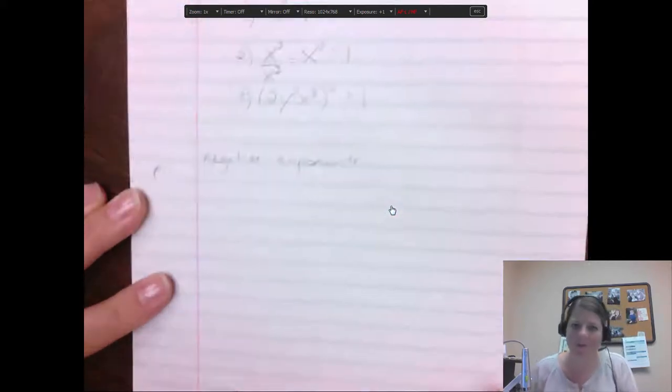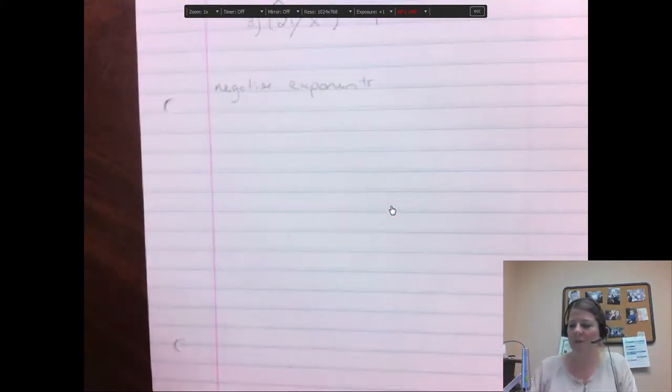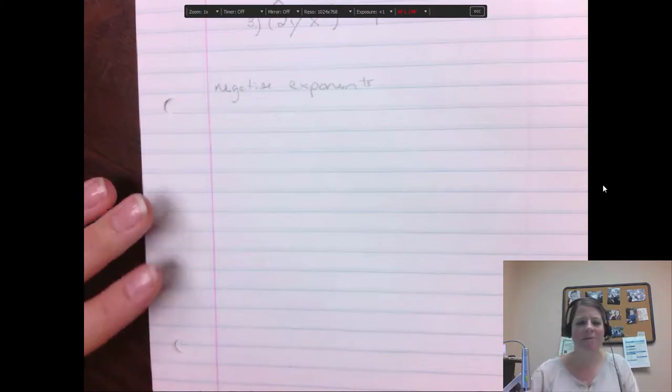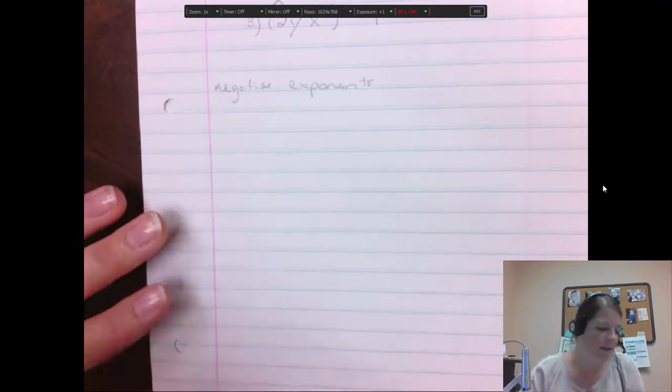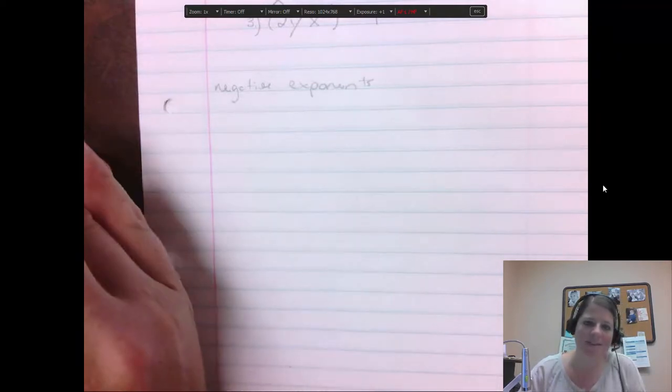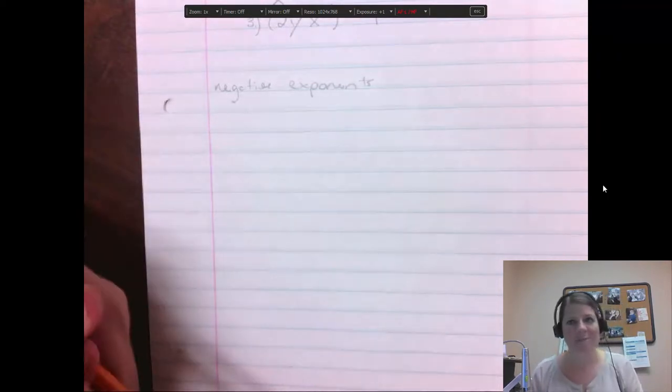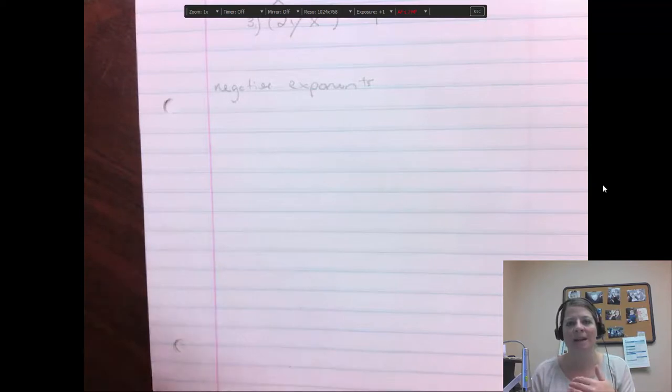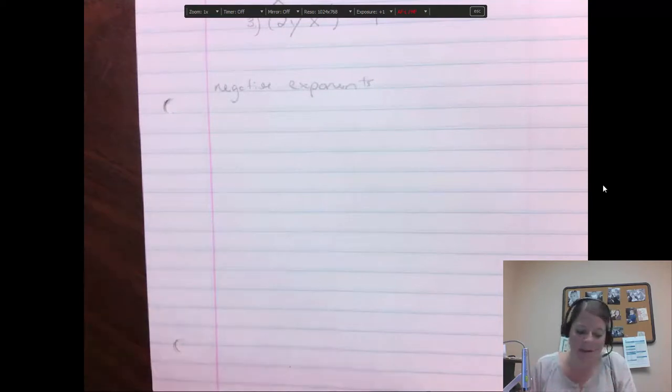So negative exponents are very separate from 0. We just put them together because they're both a little bit shorter idea. Okay, so the biggest thing with negative exponents is you aren't allowed a negative exponent. So you can't put in an answer with a negative exponent unless you're doing scientific notation. Then they let you. That's about the only place. Otherwise, they want you to get rid of it.